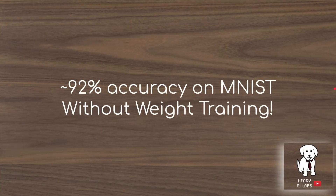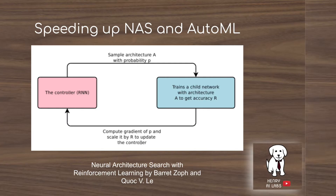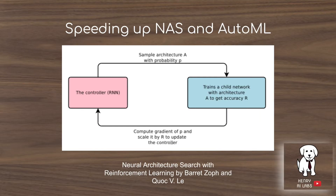This technique of weight agnostic neural networks is able to achieve about 92% accuracy on MNIST without any weight training. This is also really appealing for speeding up neural architecture search and auto ML.